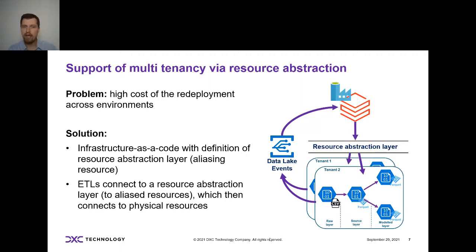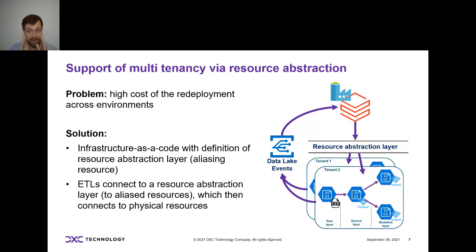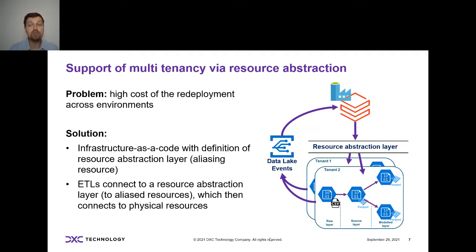Coming back to the solution: the obvious one is infrastructure as code. Every single thing you deploy — never use wizards. If you're just making a POC, fine, but as soon as you're doing something that is supposed to become production — so not POC but MVP, minimum viable product — always have everything 100% infrastructure as code, not 95%, not 99% — 100%. Everything is deployed by scripts.